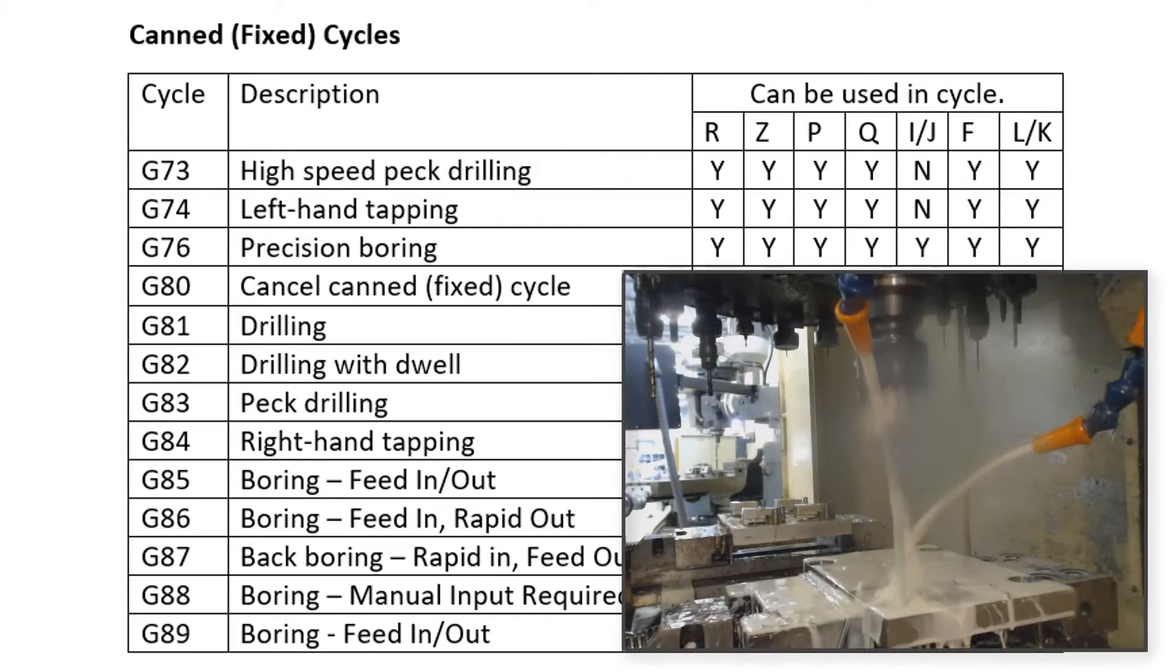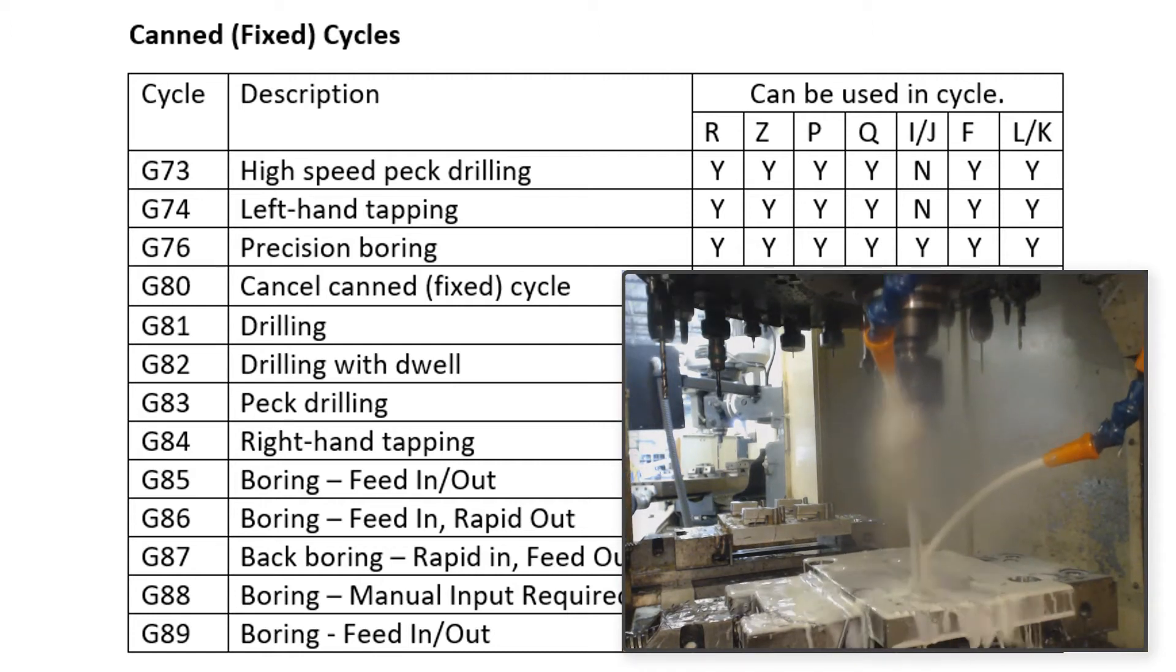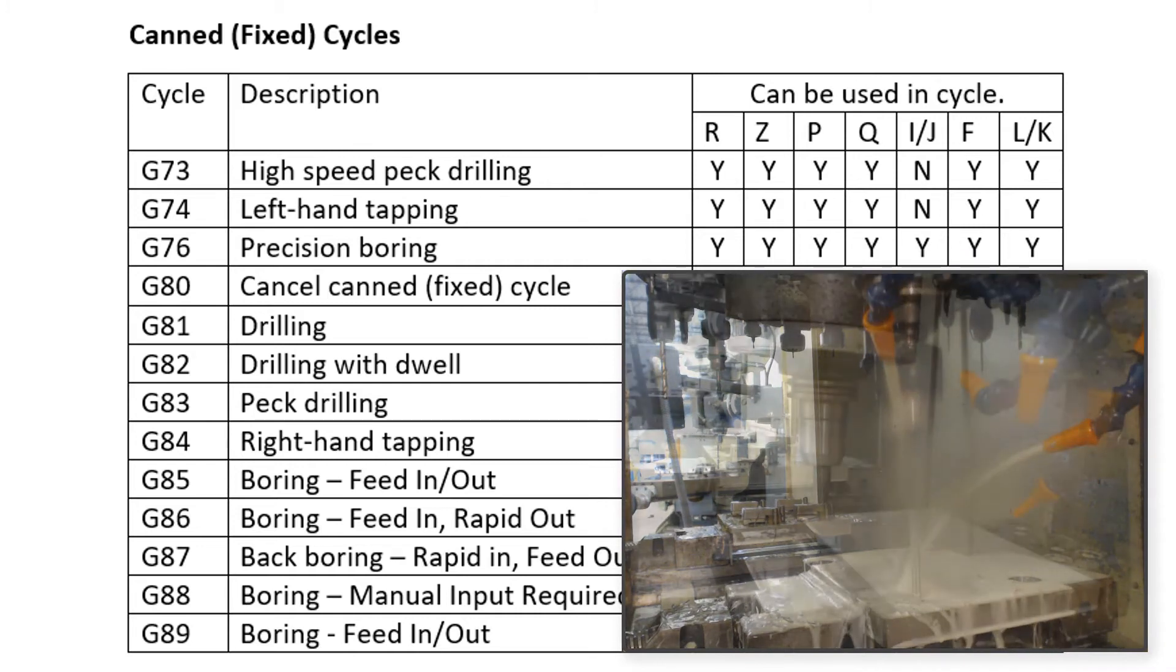G81 will feed the tool from above the hole to the bottom in one motion and then rapid the tool out of the hole. This is typically used for reaming, short hole drilling, countersinking, counterboring, or when peck drilling is not a requirement.